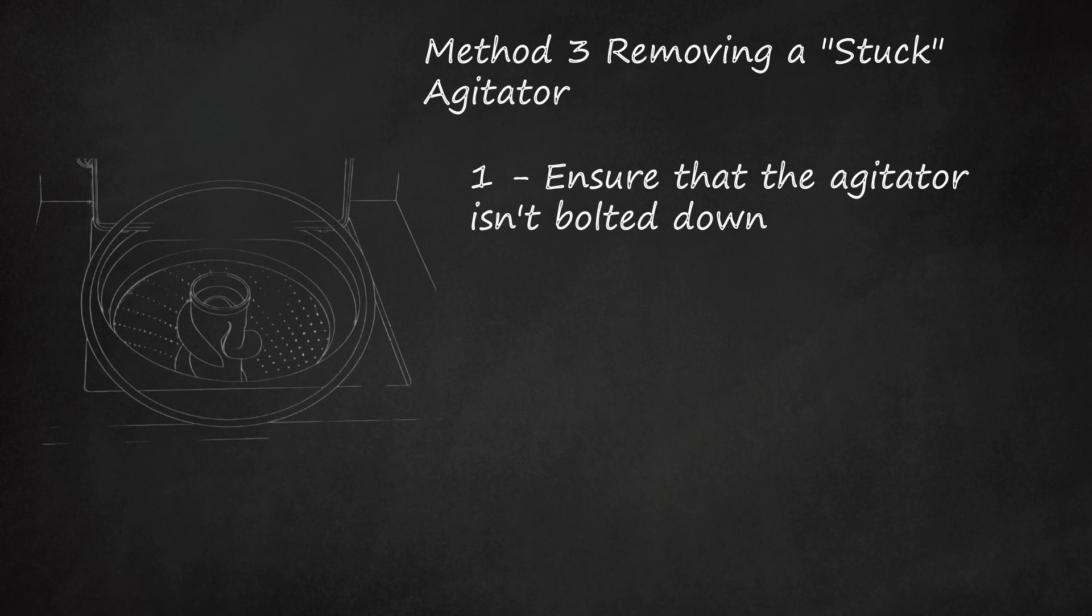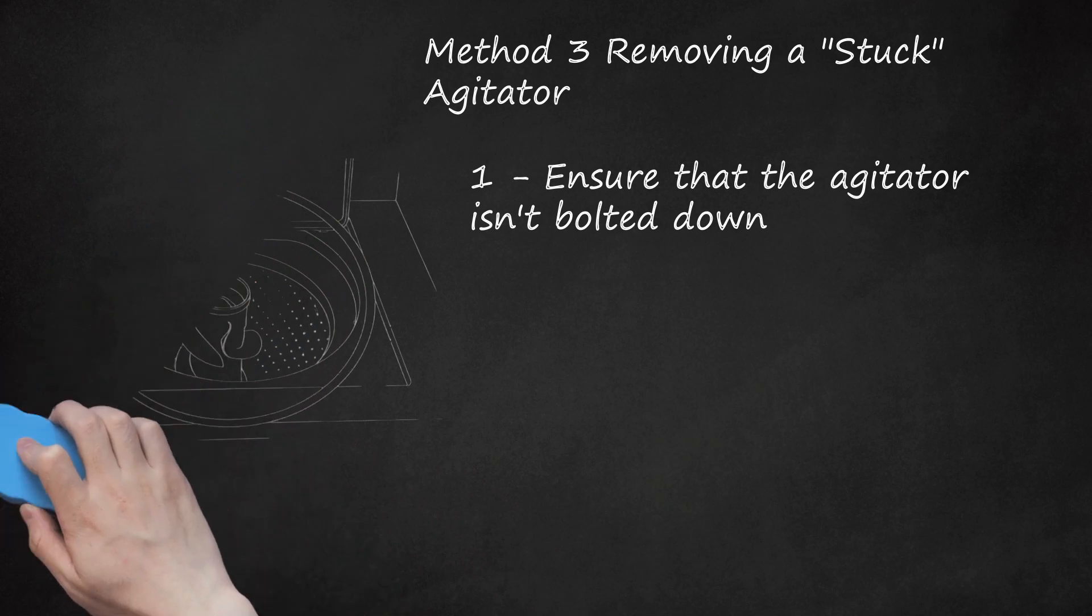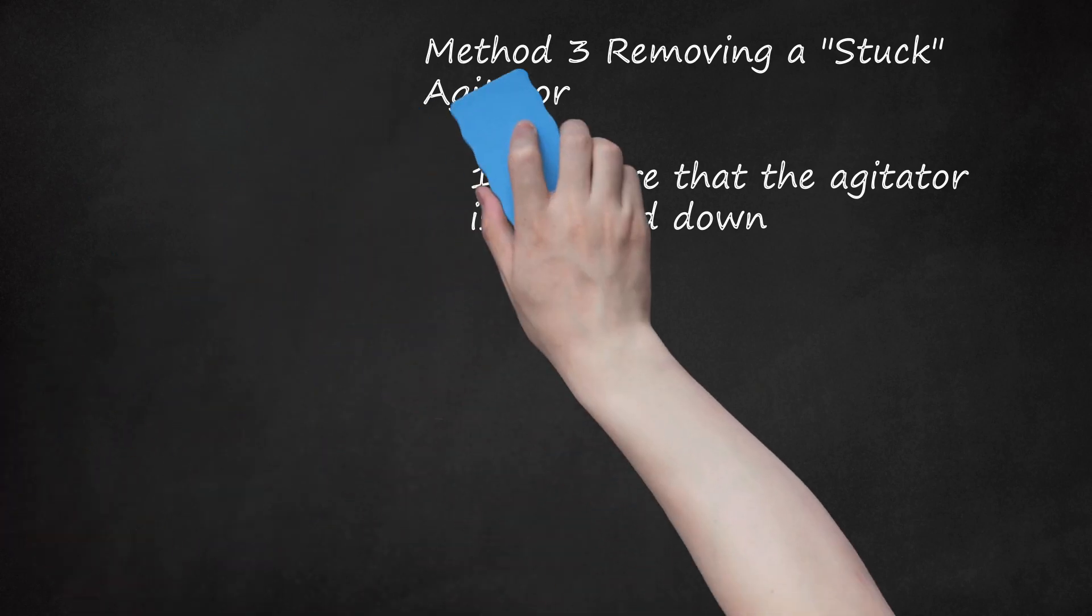However, if this method is used to force an agitator that is bolted or otherwise fastened in place, it can break the agitator and even cause damage to the inner machinery of the washing machine. For this reason, it's extremely important to ensure that the agitator is not bolted down before attempting this method. Remove any bolts holding it in place as directed above and ensure that the agitator for your model of washer can be safely removed before beginning. If in doubt, contact a mechanic, the price of a repair is usually minor compared to the price of replacing a broken machine.